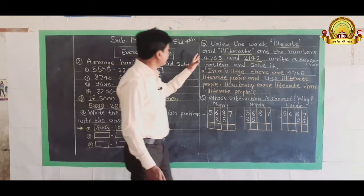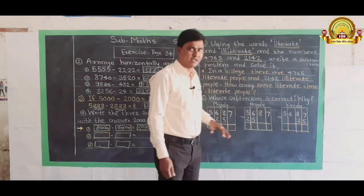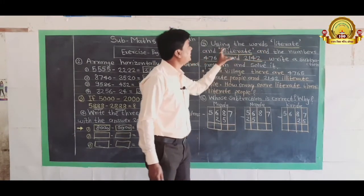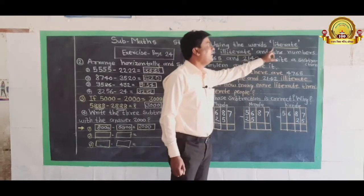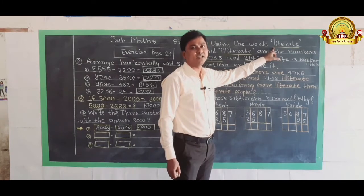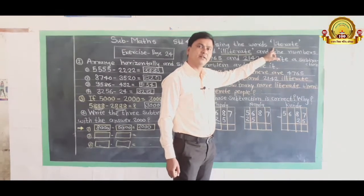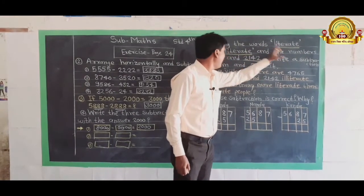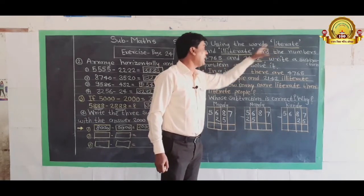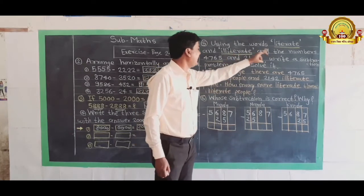Question number 5 is like this. Using the words, which word? Literate and illiterate. I am going to call it saksar. Saksar is equal to knowledge, shiklele. It is opposite words. One is literate, one is illiterate.